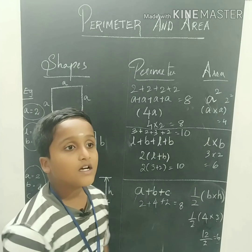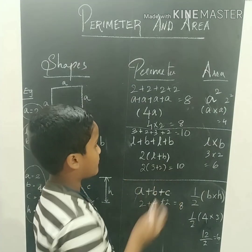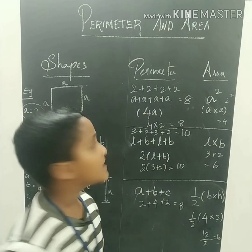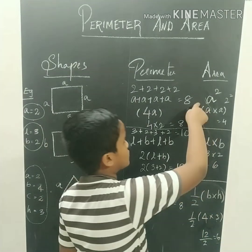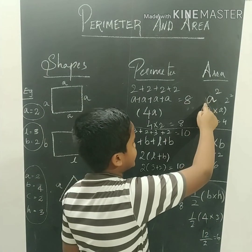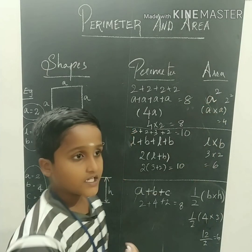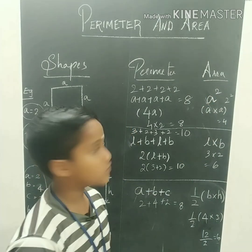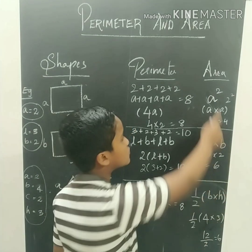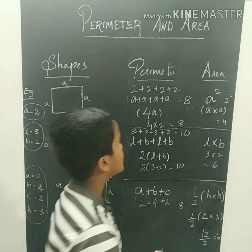Now, look at this square for area. A is equal to 2, so the area is A squared, which is 2 squared, equal to 4.